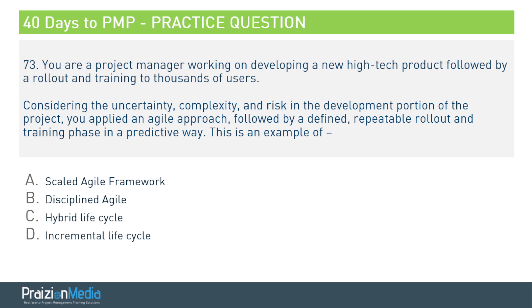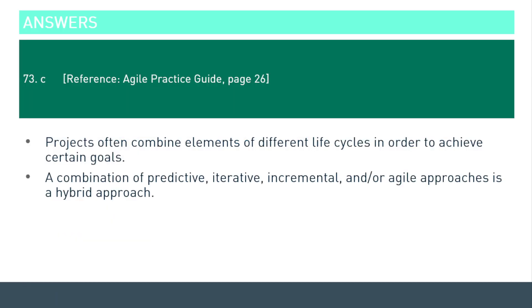The answer to this is not scaled Agile or Discipline Agile, and it's not an incremental life cycle. This is in fact a hybrid. Projects often combine elements of different life cycles to give a hybrid approach. Make sure you hit pages 26, 27, 28 in the Agile Practice Guide — it's going to help you on this one.